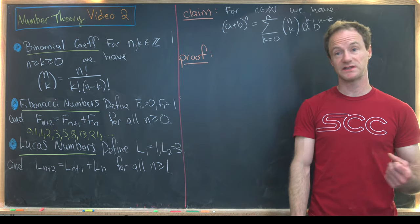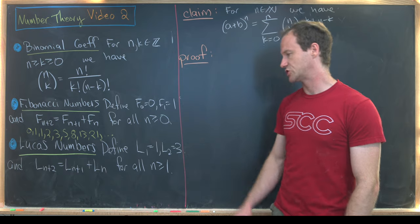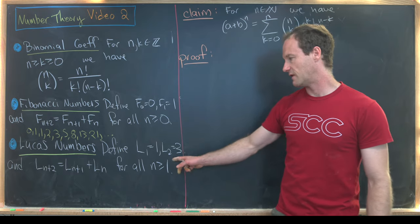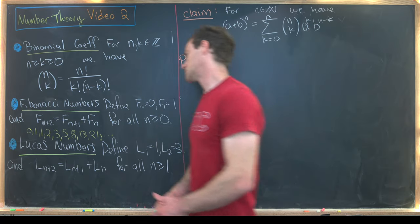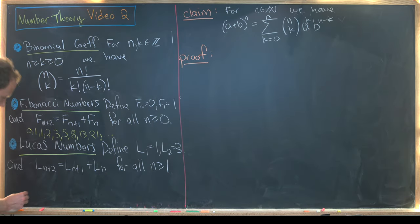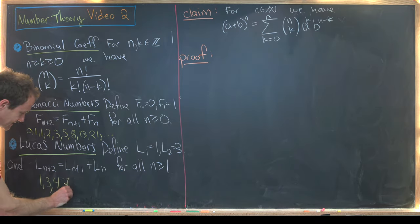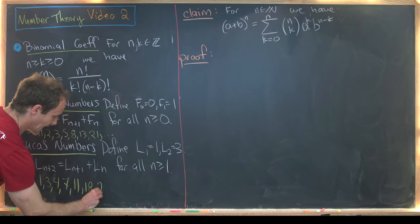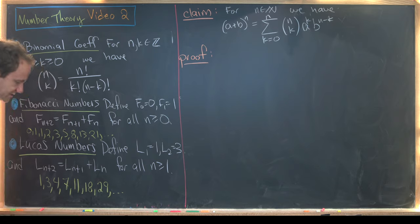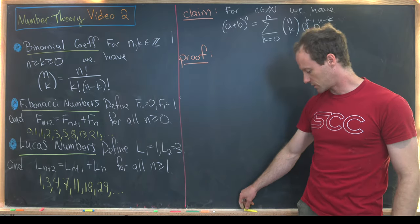Lucas numbers are similarly defined. We set L_1 equals 1 and L_2 equals 3, with the same recursion as the Fibonacci sequence. The sequence begins: 1, 3, 4, 7, 11, 18, 29, and so on.